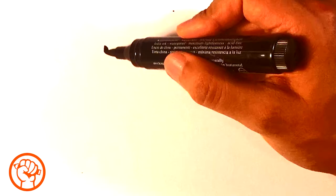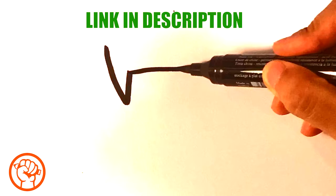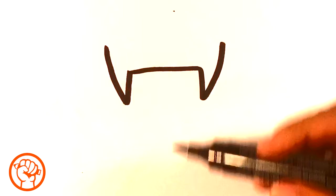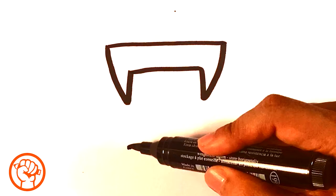Probably one of the easiest ones on the channel. Pull a line down, pull a straight line across, pull another line downward. It's essentially this triangle shape. Pull across here.